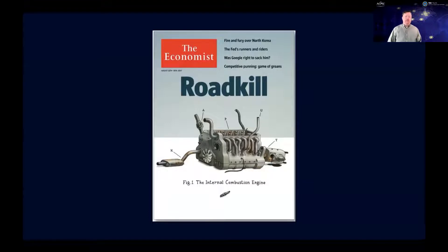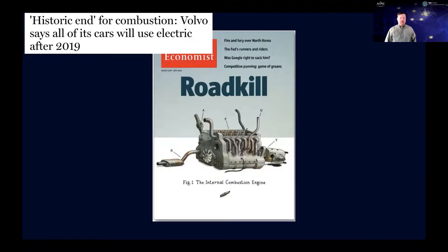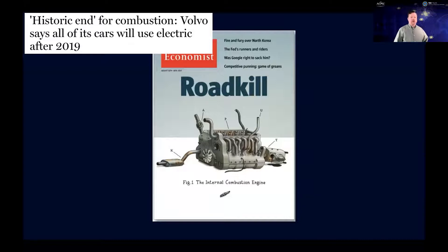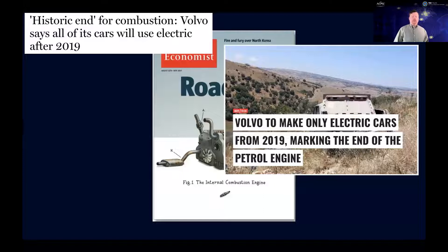That year there was a ton of media coverage. Volvo sort of led the charge — though it wasn't Volvo who said what the media reported; the media took what Volvo said and sensationalized it. Headlines included 'Volvo says all its cars will use electric after 2019' and 'Volvo to make only electric cars in 2019, marking the end of the petrol engine.' But if you go to the Volvo website today in 2021, you can certainly buy a Volvo with an internal combustion engine in it.